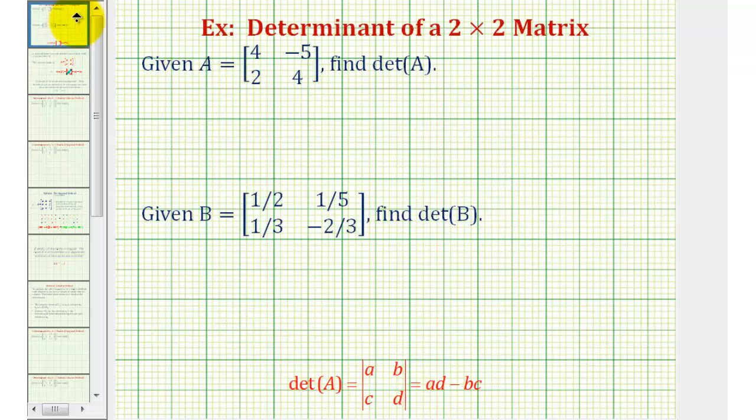So going back to our two examples, if we want to find the determinant of matrix A, we can use vertical bars to represent the determinant. It's important that we use bars here rather than brackets for a matrix.